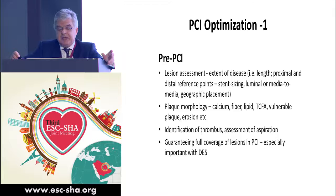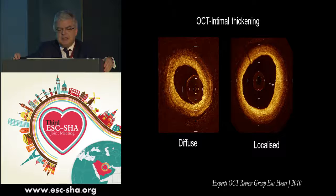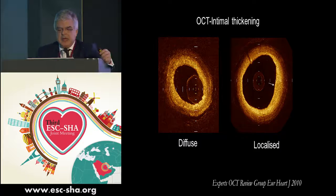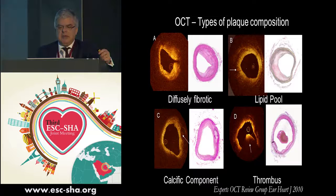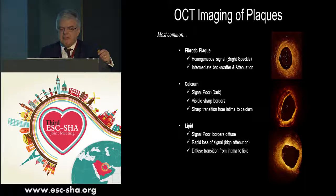This shows a nice example of how you can differentiate diffuse from focal lesions. When you compare with histology and pathology, you can nicely demonstrate the different types of plaque composition — from diffusely fibrotic, to a lipid pool, to a calcific component and thrombus — all of which can be shown on these images. The most common types of plaques — fibrotic, calcified, or lipid — can be demonstrated because of the very high resolution of OCT.